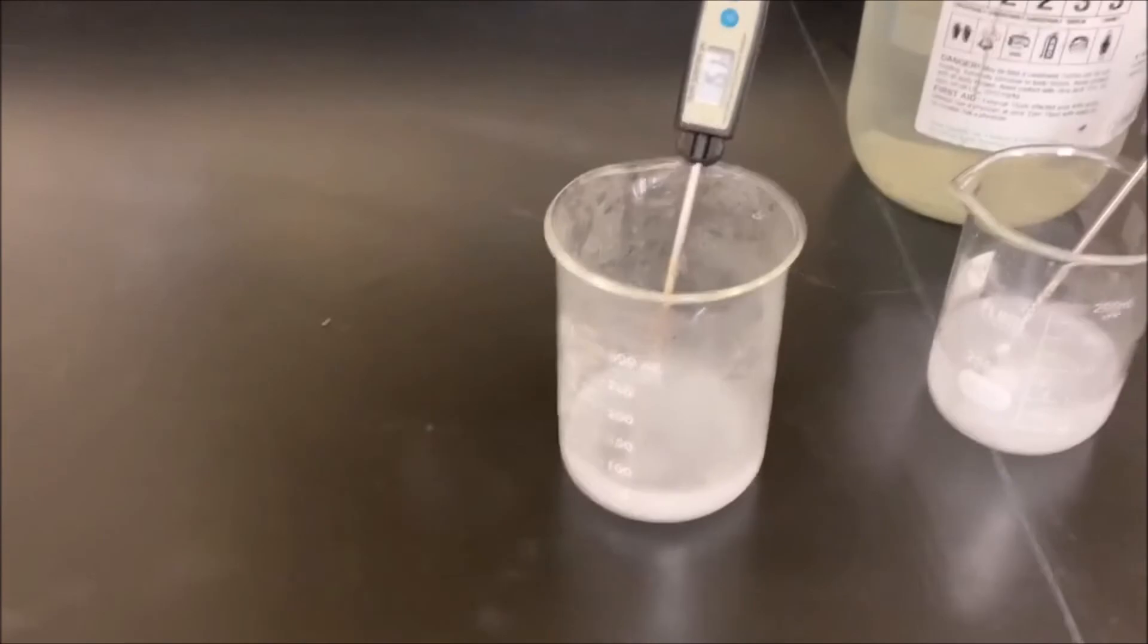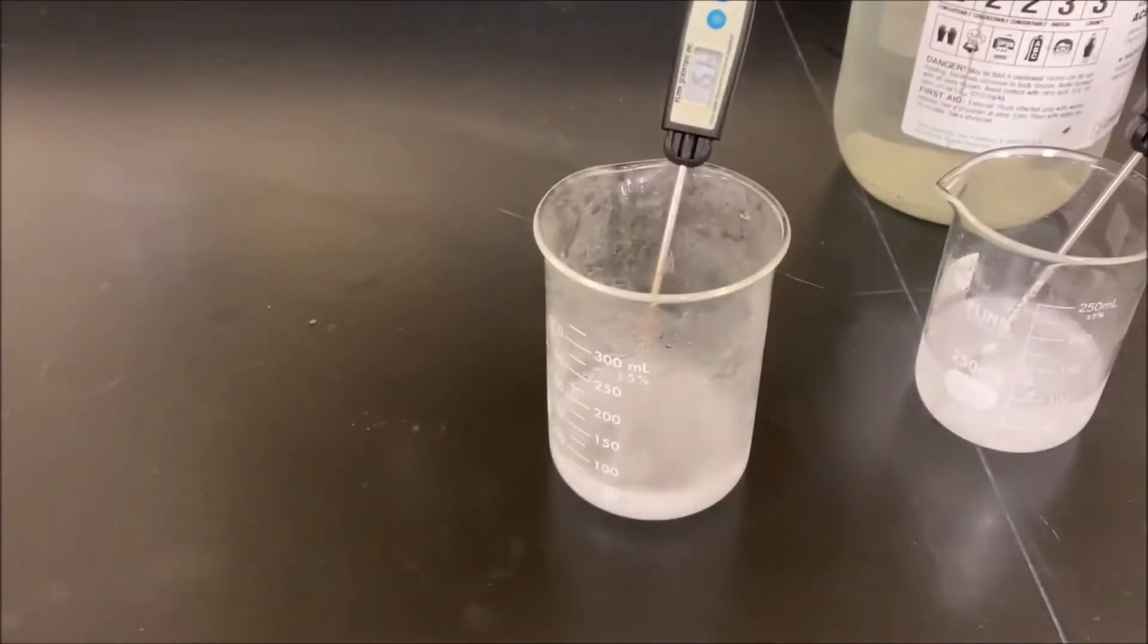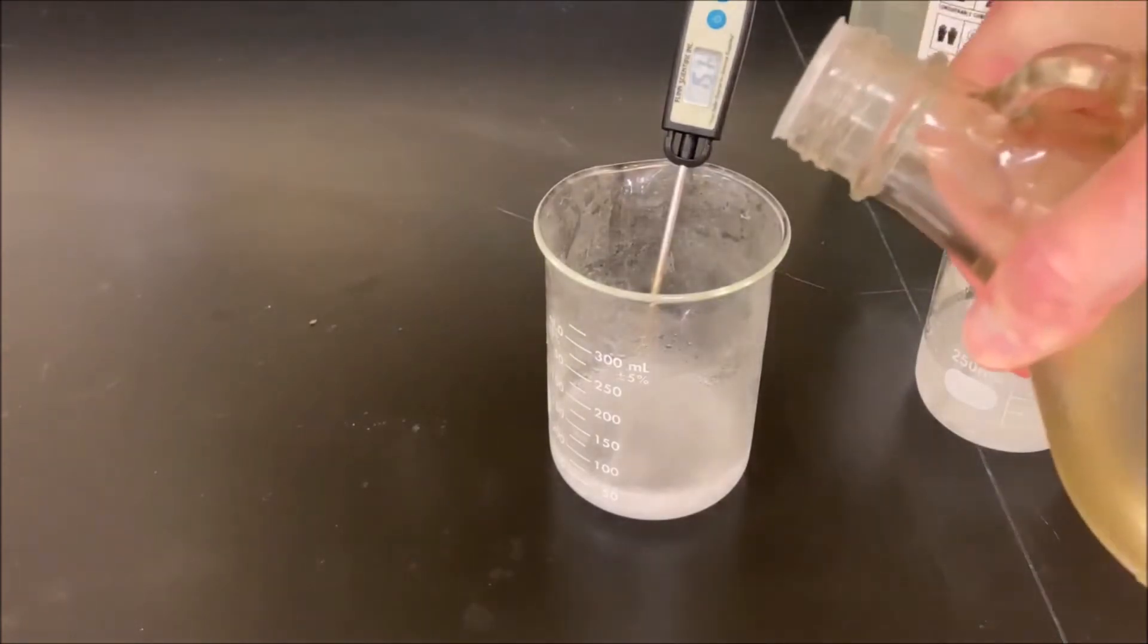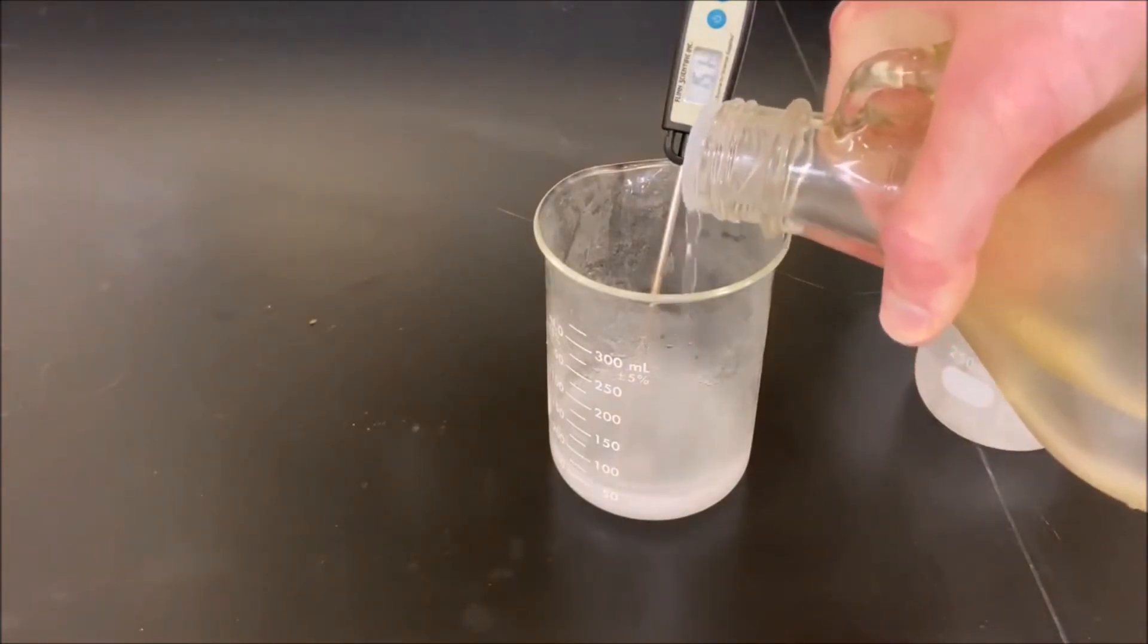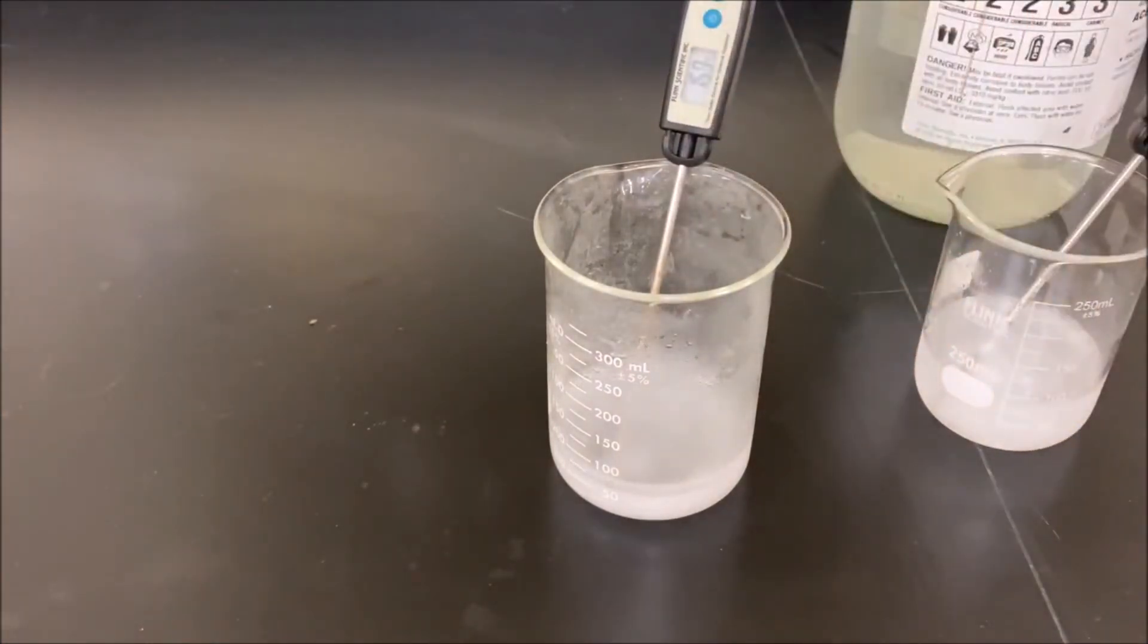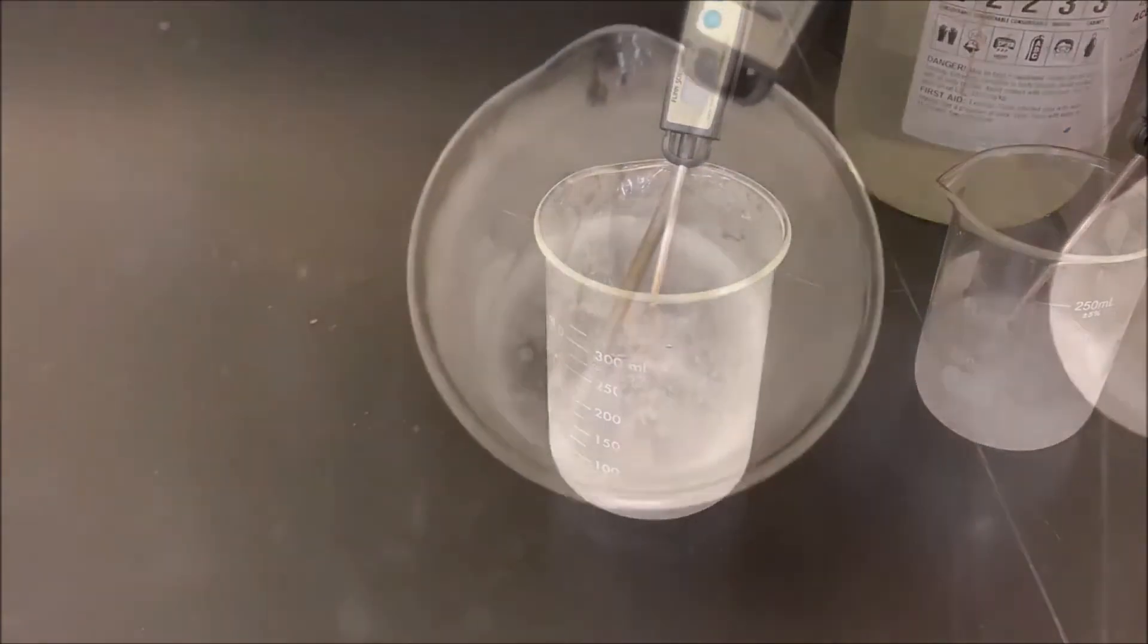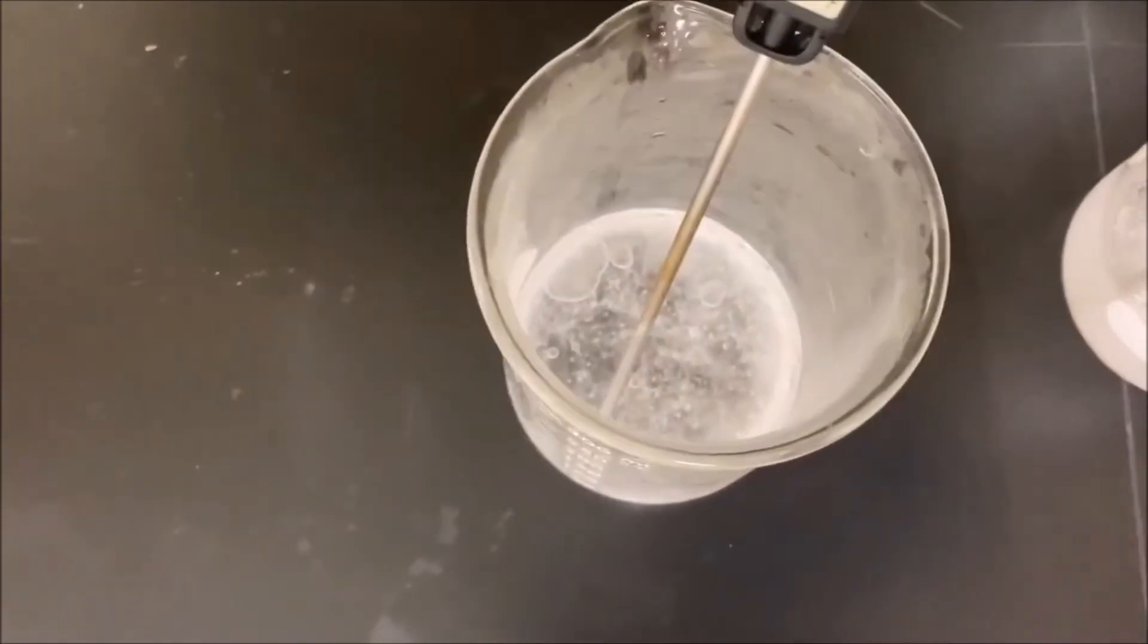So we're going to go ahead and take this and add some solution of baking soda to it, and potentially that will melt the acetic acid and potentially we'll see some more bubbling, but we'll see. I'm going to put that right on top.